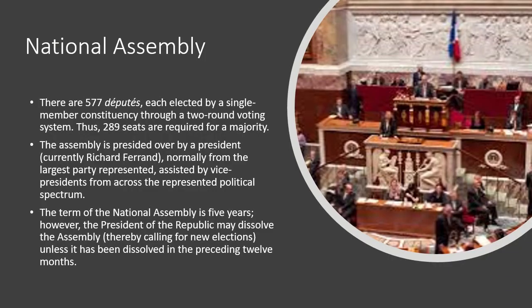The National Assembly has 577 deputies, each elected by a single-member constituency through a two-round voting system; 289 seats are required for a majority. The Assembly is presided over by a president — currently Richard Ferrand — nominally from the largest party, assisted by vice presidents from across the political spectrum. The term is five years; however, the president of the republic may dissolve the assembly, calling for new elections, unless it has been dissolved in the preceding 12 months.